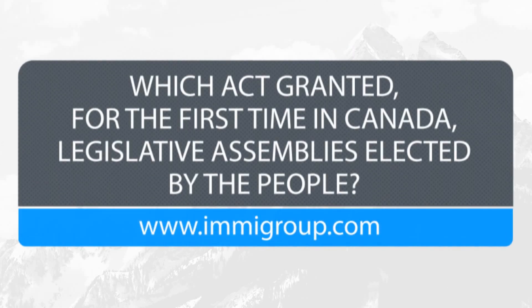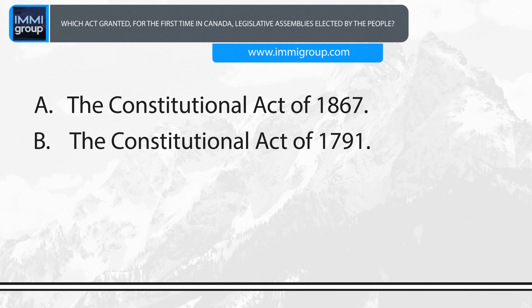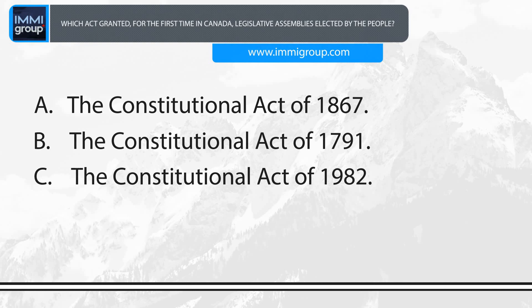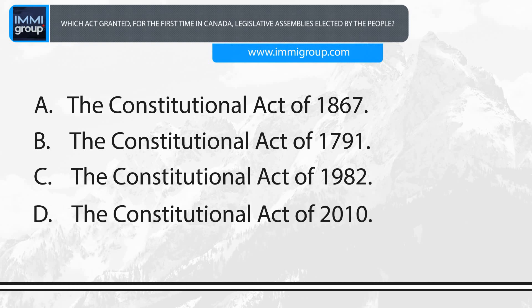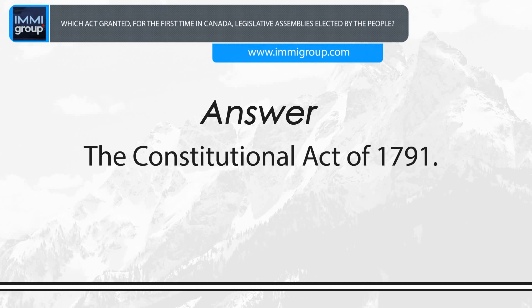Which act granted for the first time in Canada legislative assemblies elected by the people? A. The Constitutional Act of 1867. B. The Constitutional Act of 1791. C. The Constitutional Act of 1982. D. The Constitutional Act of 2010. Answer: The Constitutional Act of 1791.